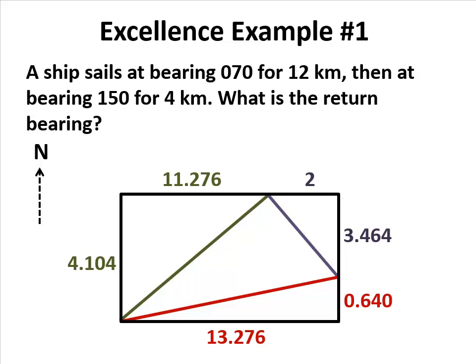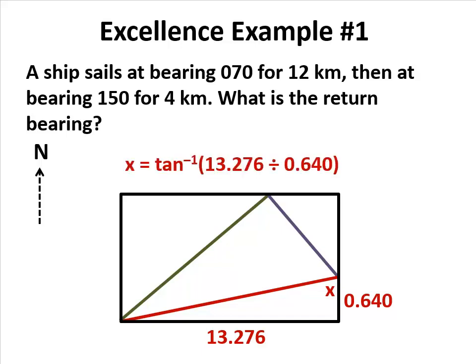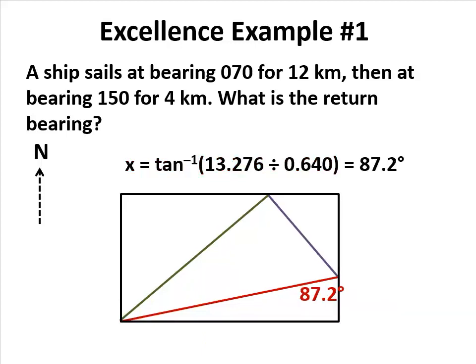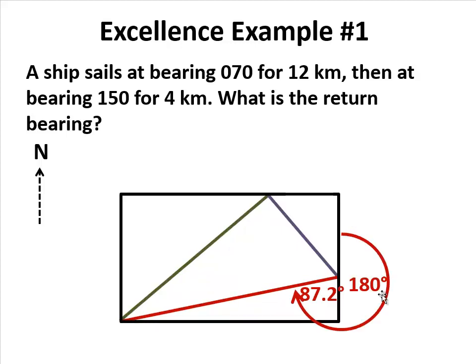Two pieces of information, we can solve this triangle. We're needing to find that, which means we need to find that angle. Inverse trig, we can calculate it as 87.2. Question doesn't ask for that, asks for the bearing. So we need to take it from north, that angle we have 180 degrees to get us to south, a further 87.2, so the answer is 267.2 degrees.